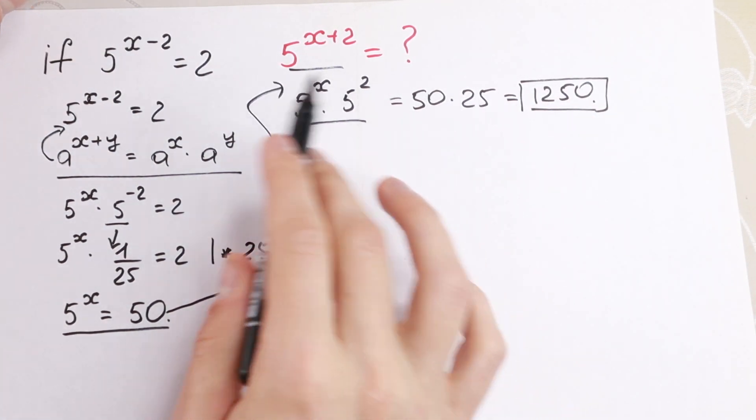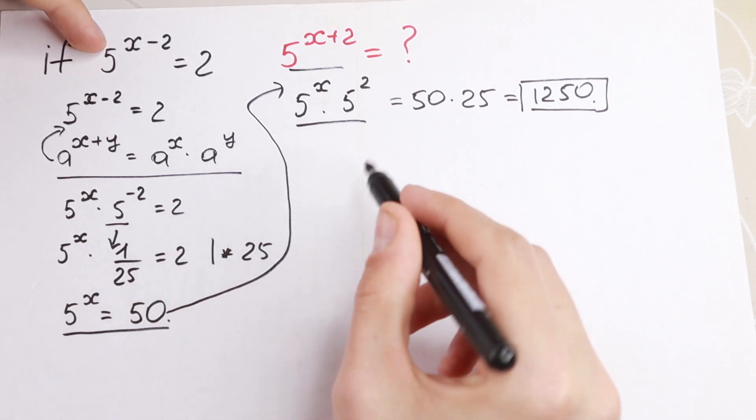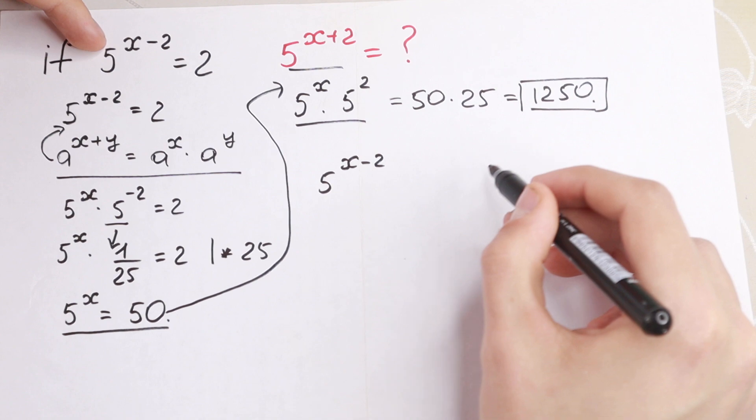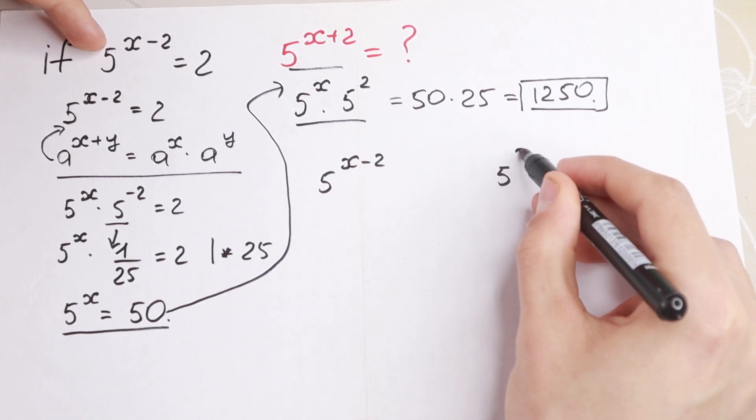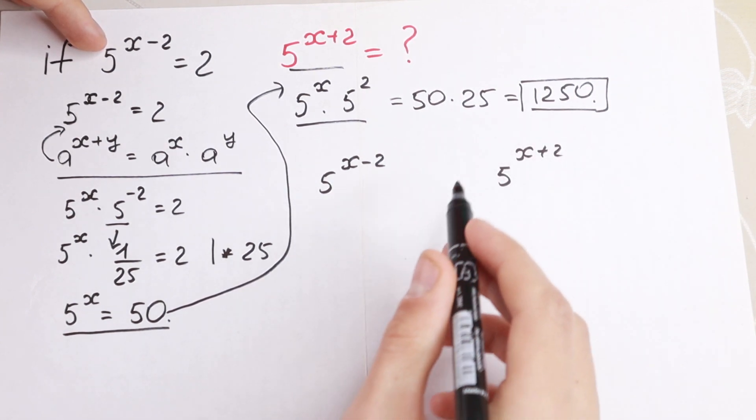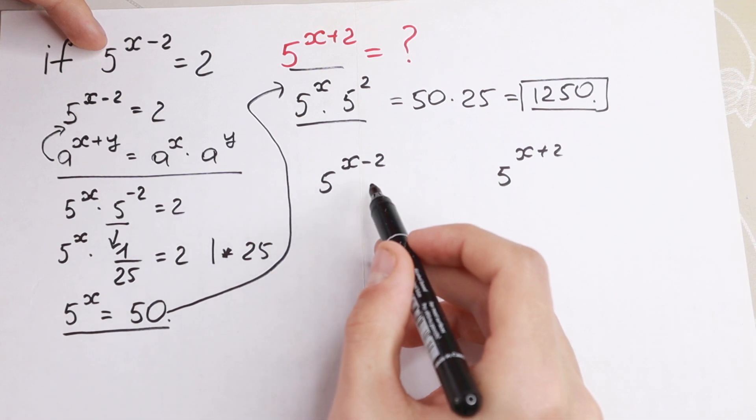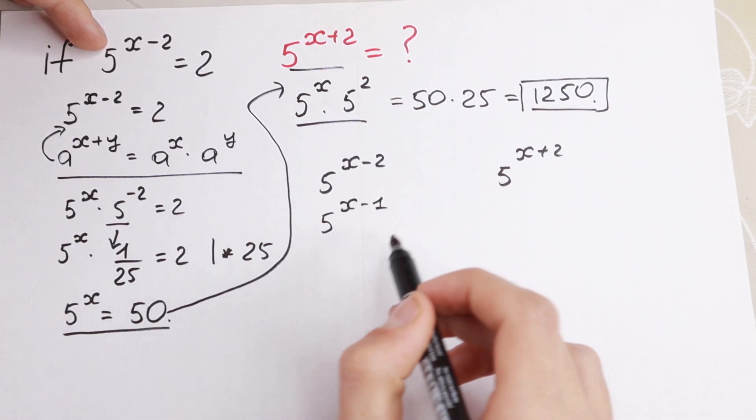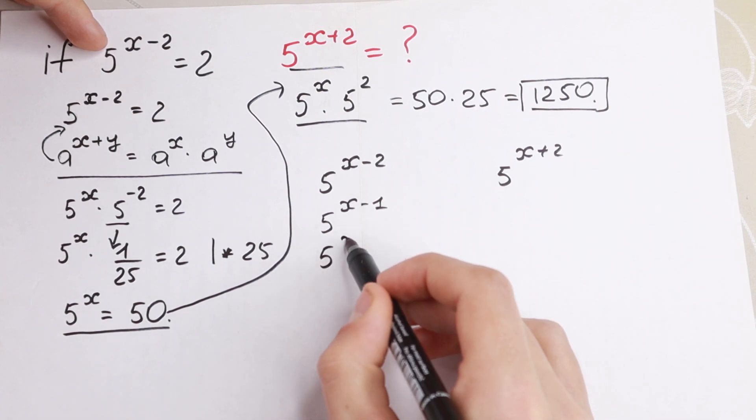Of course, there's the second way how we can solve it. Take a look, this is the power 5 to the power x minus 2. But we need to find 5 to the power x plus 2. So if we multiply it by 5, we will have 5 to the power x minus 1. If we multiply by 5 once more, we will have 5 to the power x.